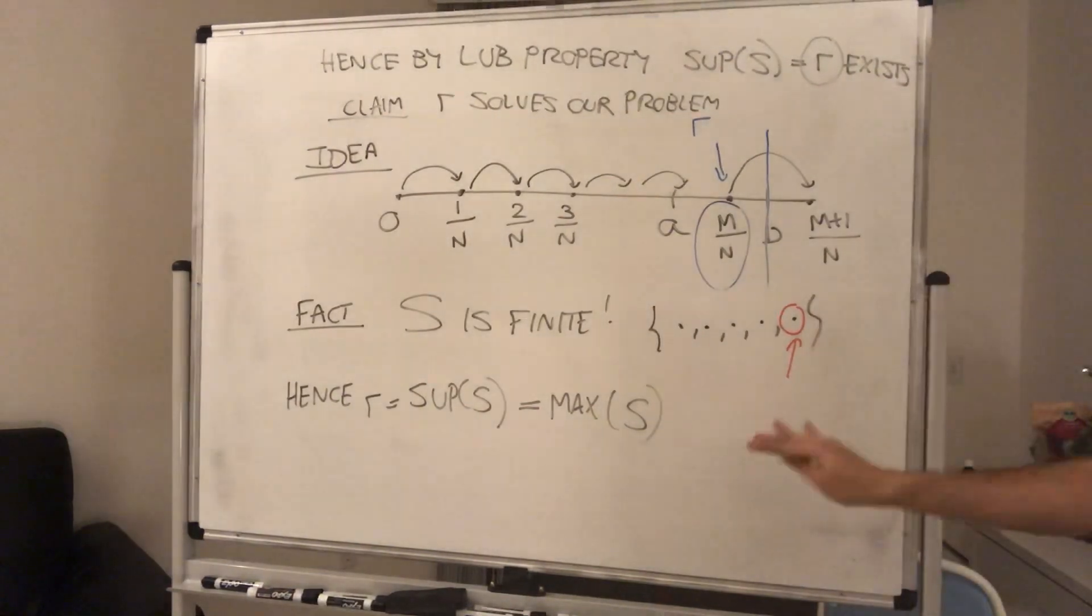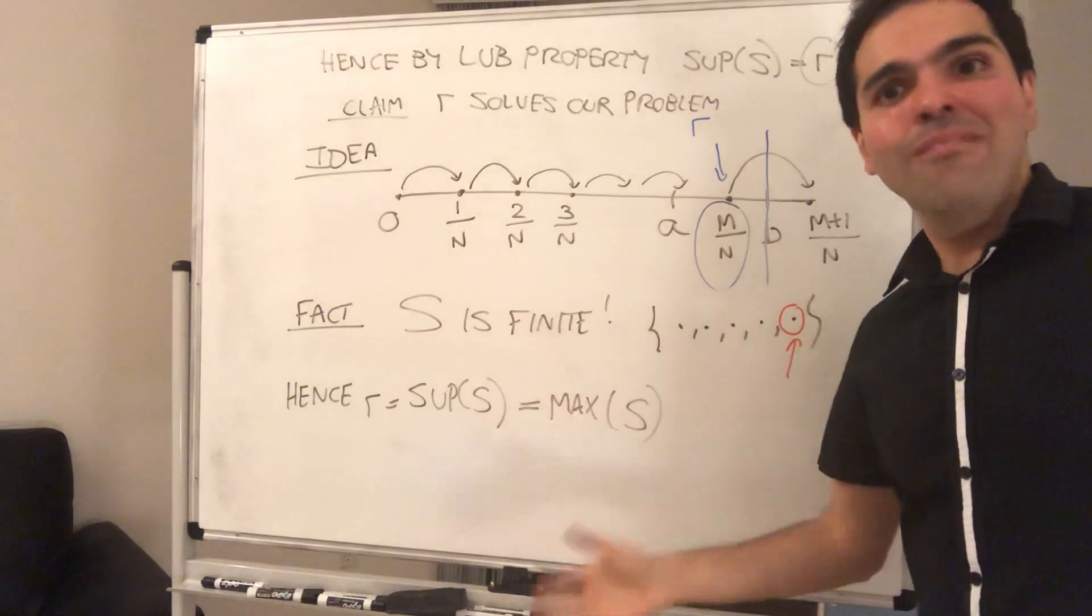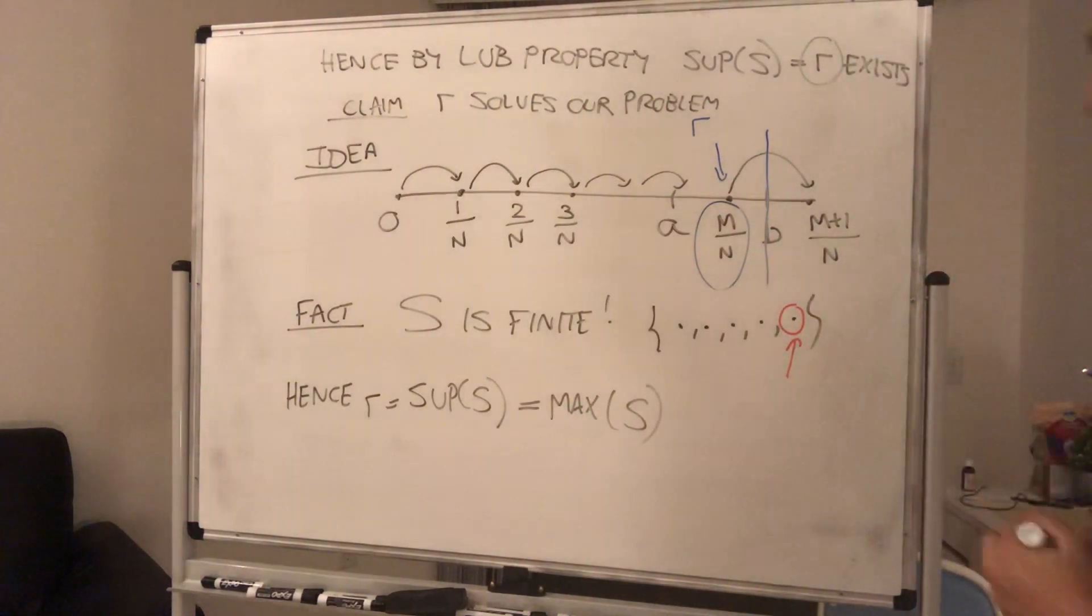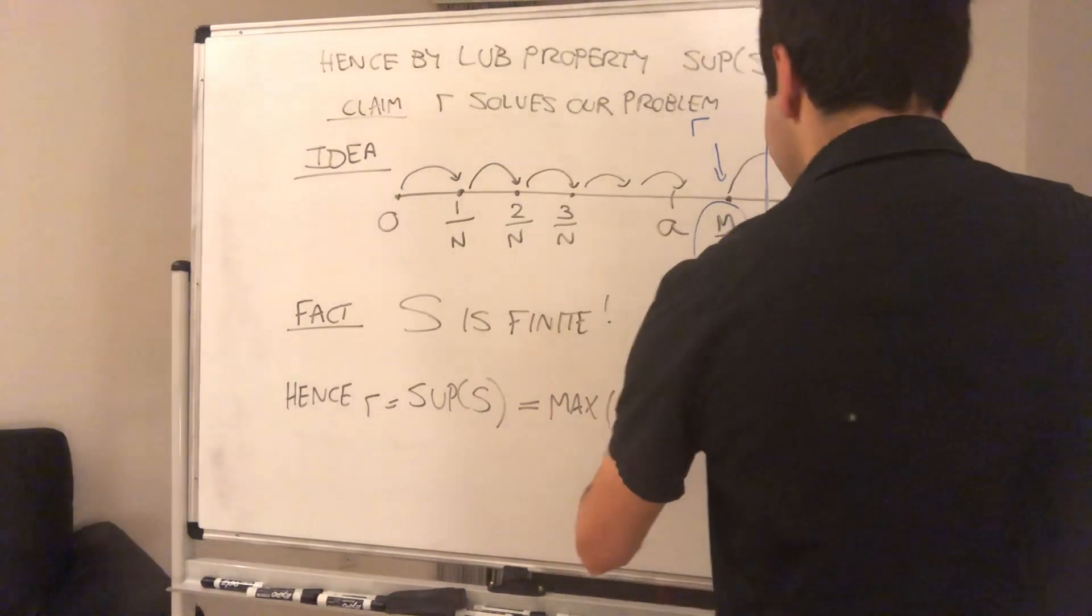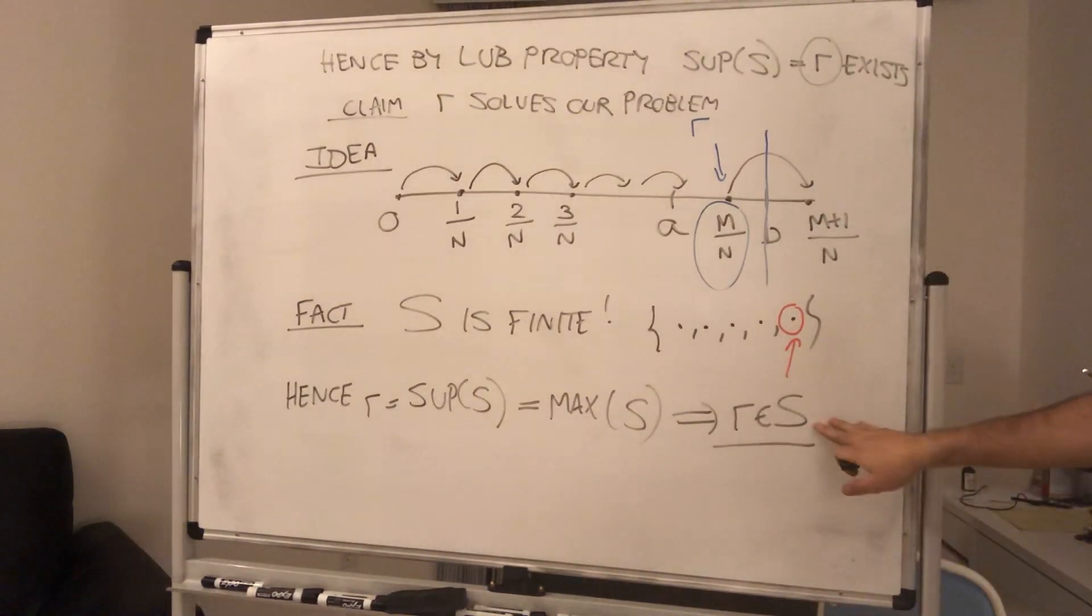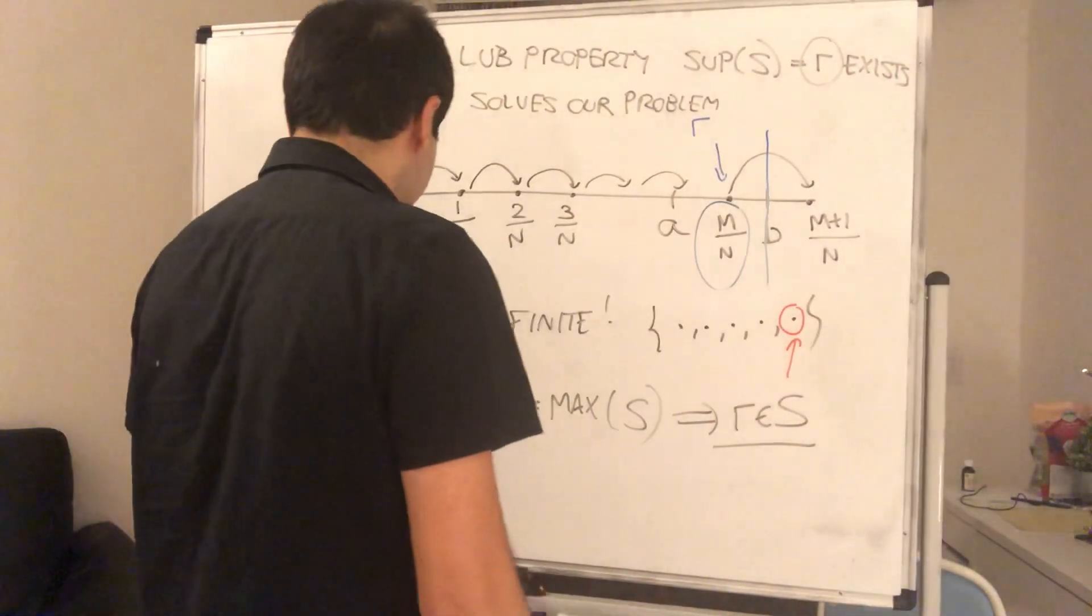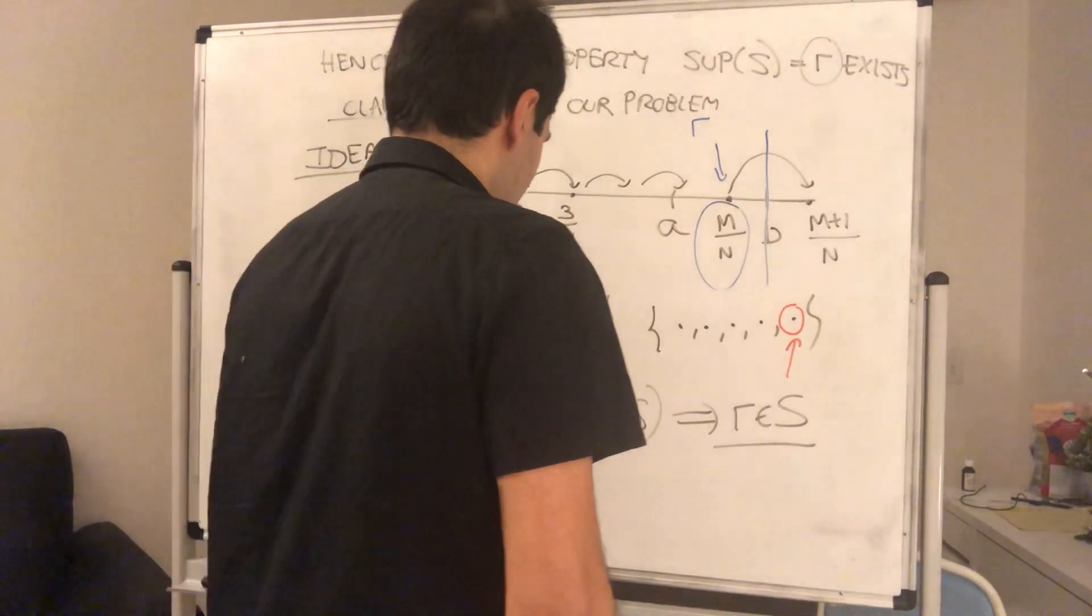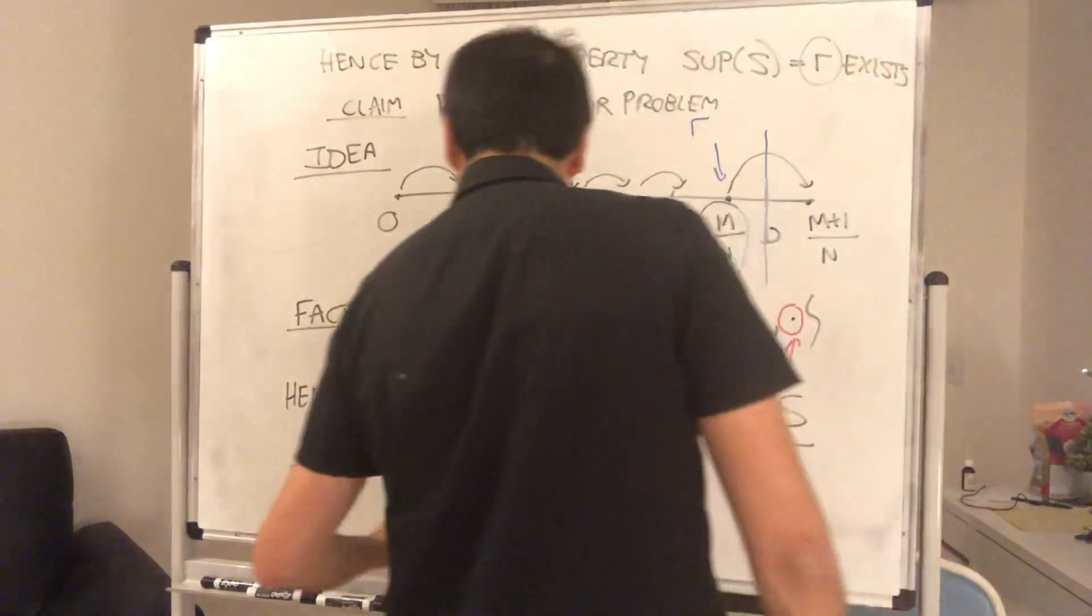What's the point? The point is the supremum problem is only important for infinite sets. For finite sets, it's not a big problem. And in particular, what this implies, this implies r is in S. Why is this cool? Because what does it mean to be in S? It means two of the three properties are already there. Namely, r is rational. And also, r is less than b.